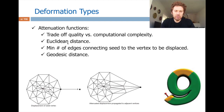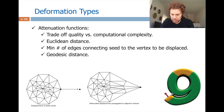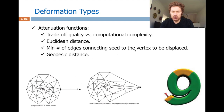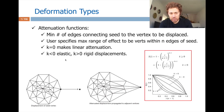The way to decrease displacement is a matter of choice. You can simply use Euclidean distances, which is fast but not that accurate — for example, when I move this yellow vertex, the Euclidean distance to the green region is very close, so those vertices get affected even though I don't want that. Geodesic distance is a better alternative, since the yellow vertex is not close to the green part in geodesic terms, but it is costly compared to Euclidean distance.